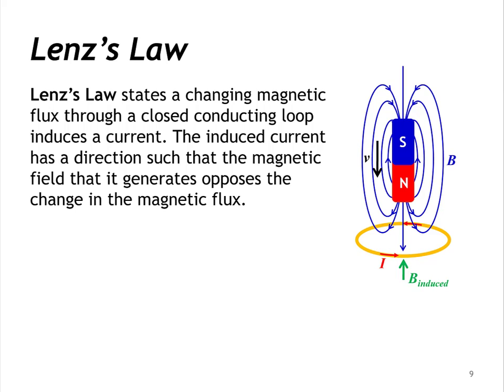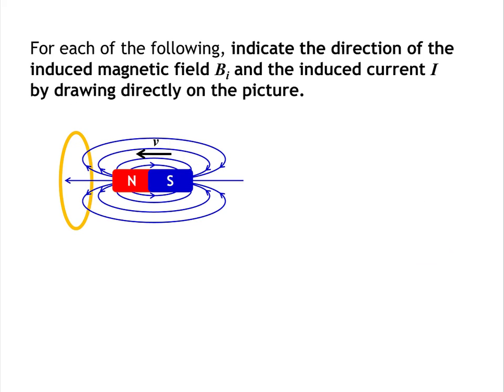Lenz's Law states that a changing magnetic flux through a closed conducting loop induces a current. The induced current has a direction such that the magnetic field it generates opposes the change in the magnetic flux. Let's look at Lenz's Law by doing an example — for each of the following, indicate the direction of the induced magnetic field and the induced current by drawing directly on the picture.